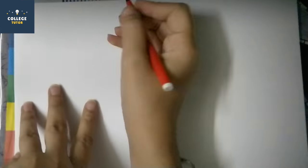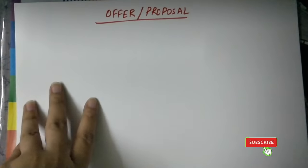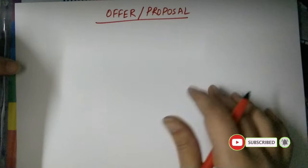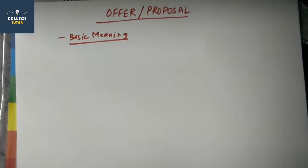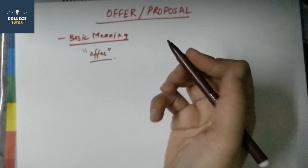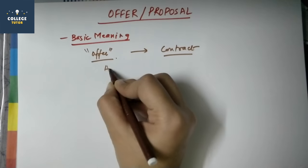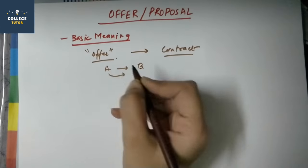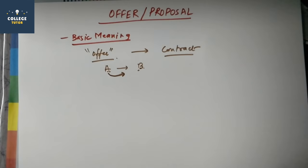Okay, so now we'll take up the next topic, that is offer or we can say proposal. Now these two words, proposal and offer. First, let's see the basic meaning. You will have seen in our previous videos that to make a contract, the first and most important step is to offer. When we offer an offer, then the first step will start a contract. If a party is offering B for a good to sell, then it will be a legal relationship between them, so our first step is to offer.